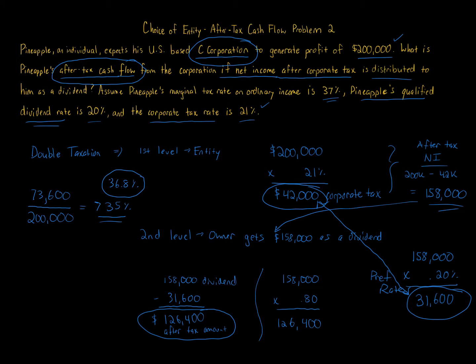Compare this to putting the business in an S corporation or partnership: if Pineapple had $200,000 of profit that's all considered ordinary income and Pineapple is in the 37% bracket, it would actually be taxed at a higher rate than 36.8%.